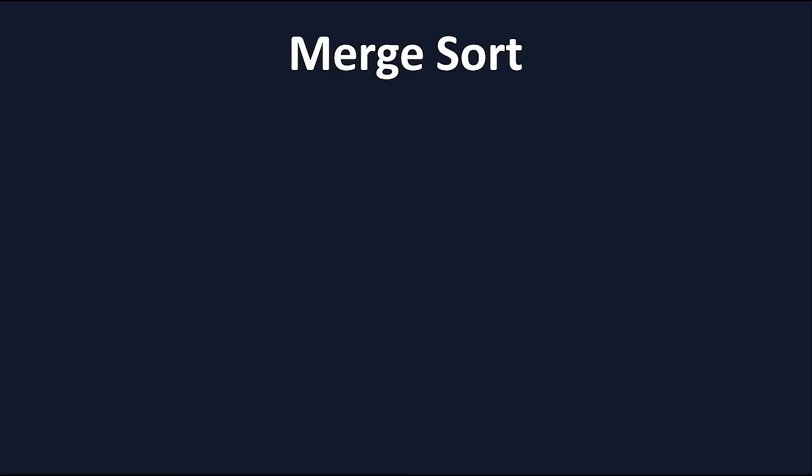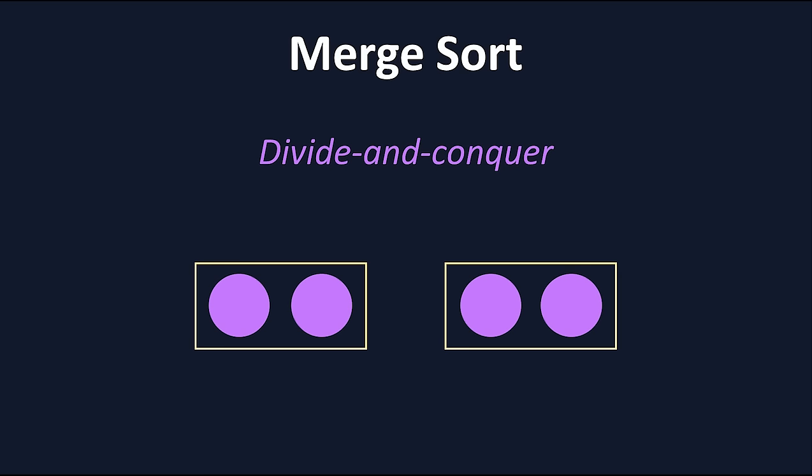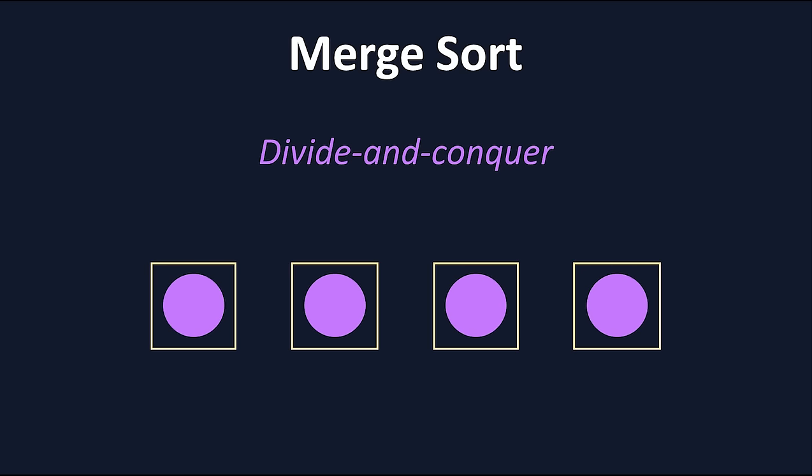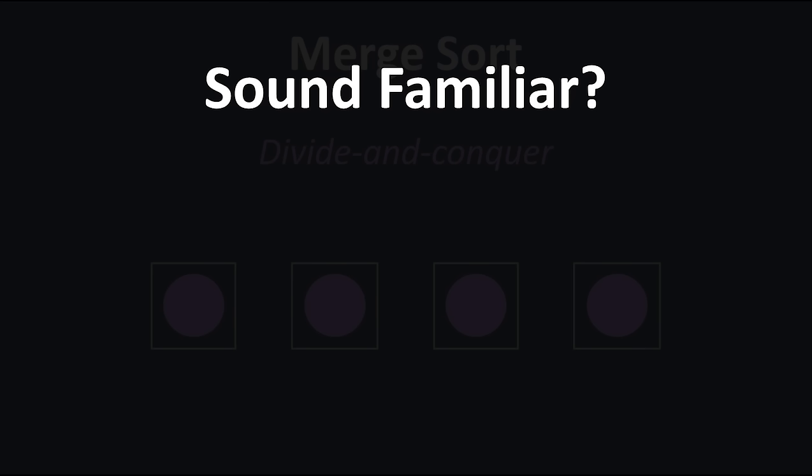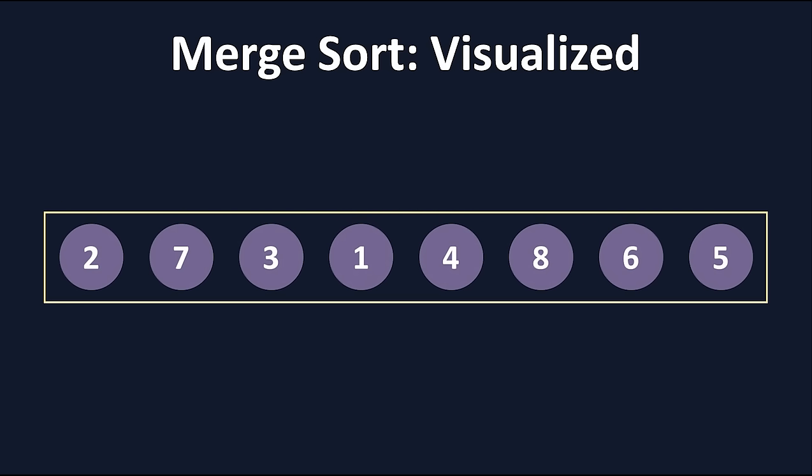Merge sort is a sorting algorithm that falls under the category of divide and conquer algorithms, because it breaks up the problem into smaller problems and solves each smaller problem. Does this sound familiar to you? Well, if you watch my video explaining recursion, I hope you recognize that this is actually a recursive algorithm. As per usual, let's look at a visualization for this.